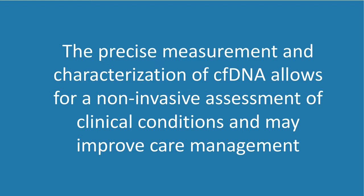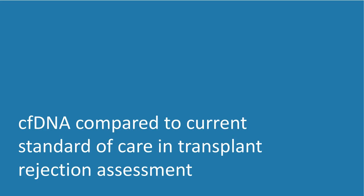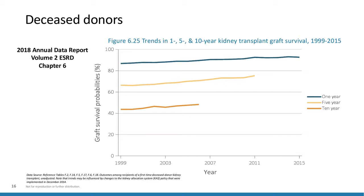Let's talk about cell-free DNA compared to the current standard of care in transplant rejection assessment. First, let's define the problem. Transplant is overall highly successful, especially in the short term. However, long-term outcomes aren't as great. Average 10-year graft survival for recipients of deceased donor kidneys is only about 45% to 50%, and this doesn't seem to have improved much over the last 10 years. For recipients of a living donor graft, the outlook is significantly better, with better 1-, 5-, and 10-year graft survival, but the 10-year graft survival is still only about 65%, and that also has not improved much.